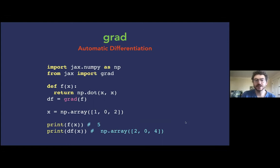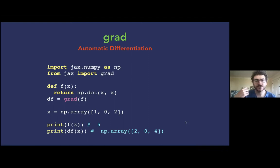There are these composable function transformations: grad, jit, and vmap. Rather than having some gradient tape you have to keep track of, JAX has function transformations that take a function and return a new function. So if I have a function f(x) that takes the dot product of x with itself — the L2 norm — if I write df = grad(f), df is now a new function that computes its gradient. If I print f(x) for input [0, 1, 0, 2], I get 5. If I print df(x), I get the gradient [0, 2, 0, 4].